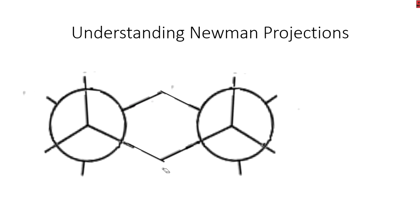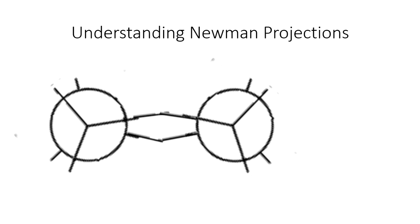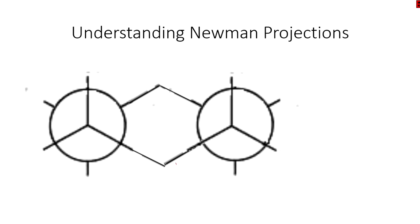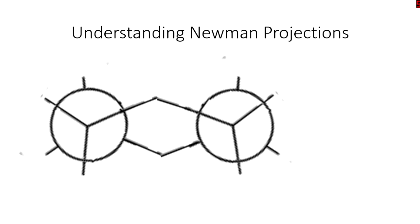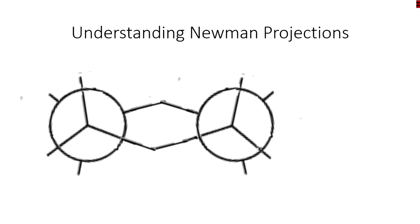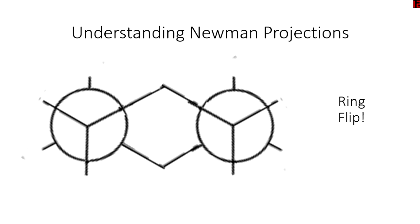And this is really what they look like in terms of Newman projections. Notice it's just going from one staggered to another staggered. And in the process, we have an eclipse in the middle, and then we have another staggered. So staggered, eclipsed, staggered.